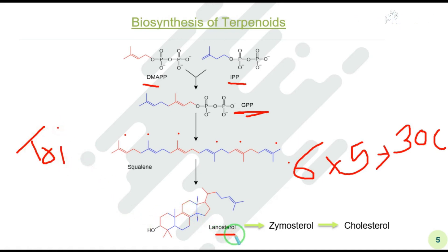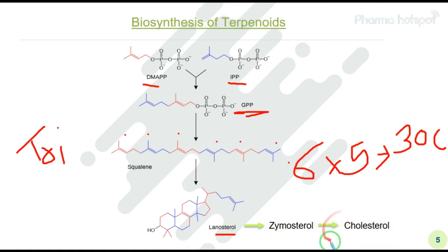From squalene, lanosterol is formed. If you count the isoprene units in lanosterol, you can determine its category — just as we determined that squalene is a triterpenoid. After lanosterol, it converts to zymosterol, and the final product formed is cholesterol. So the biosynthesis of cholesterol follows this same process.